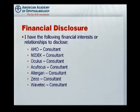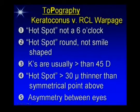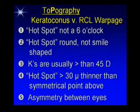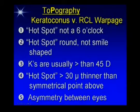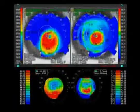Here are my financial disclosures. In topography there are five findings that have been characteristic for many years. The hot spot — the red spot you see for the cone — is almost never at 6 o'clock; it's on either side. The hot spot is round in keratoconus, whereas in contact lens warpage it looks like a smiley face. The Ks are almost always steep, over 45 diopters. The hot spot is more than 30 microns thinner at that point than the corresponding point above. And keratoconus is almost always asymmetrical, whereas contact lens warpage is almost always symmetrical.